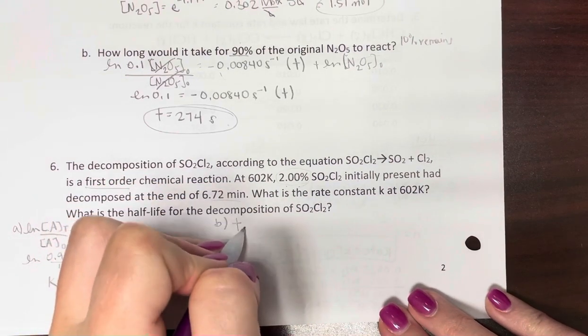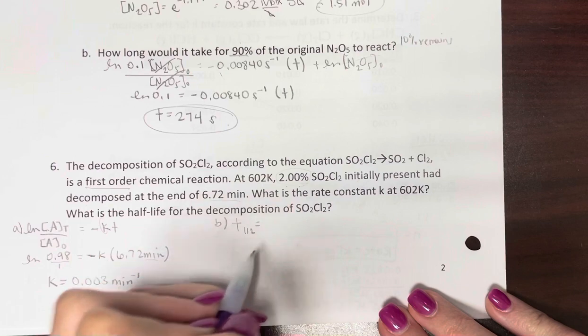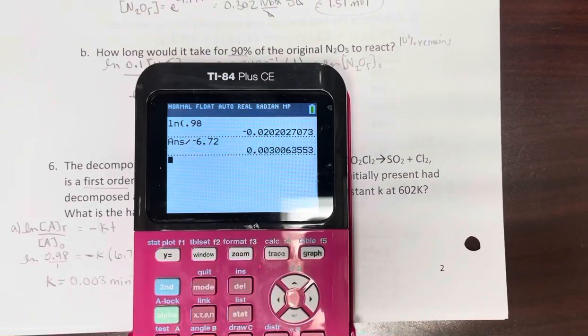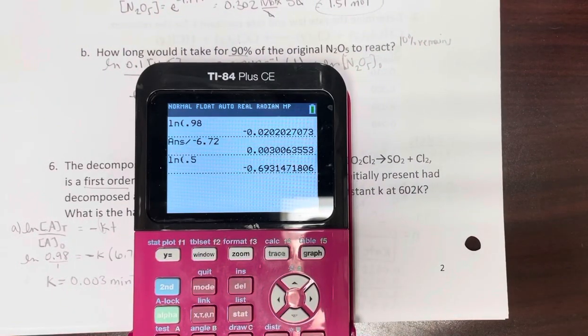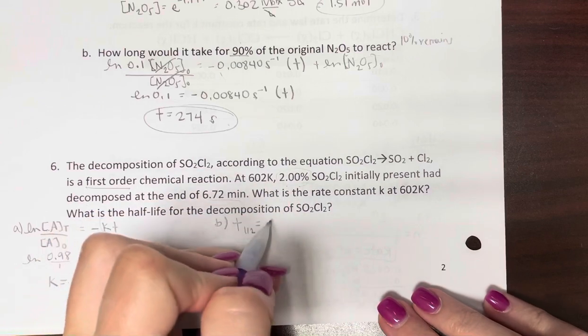Or you can use a shortcut that says t half equals - look, when you put natural log 0.5, and then you divide it by negative k.